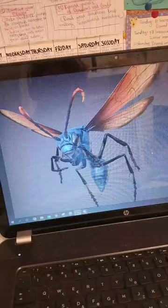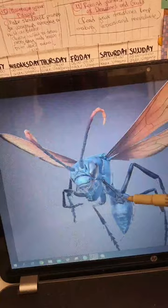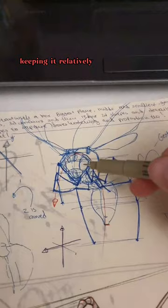Since this is a foreshortened angle, the hardest thing for me was to make the head bigger and the abdomen relatively smaller than what it originally was, but also keeping it relatively still smaller than the thorax because the thorax is bigger.